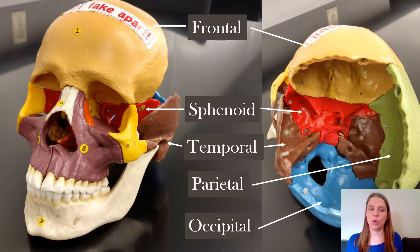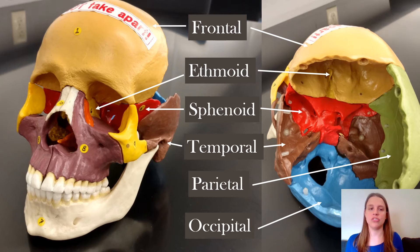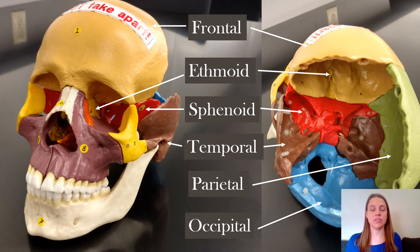And then if you look there's a little yellow bone wedged up in between the frontal bone, which is the ethmoid bone, which you can also see some of inside the eye sockets and also up inside the nasal cavity.